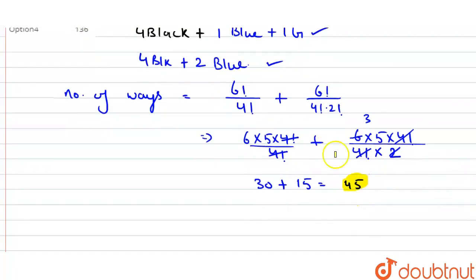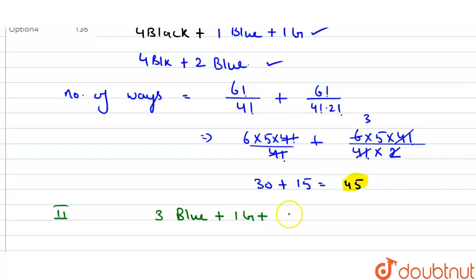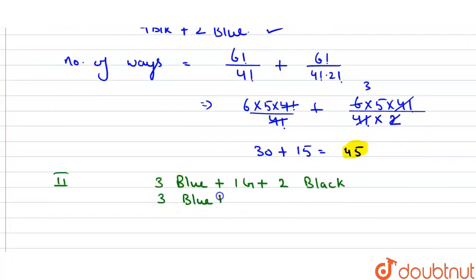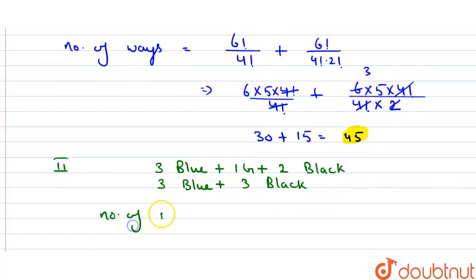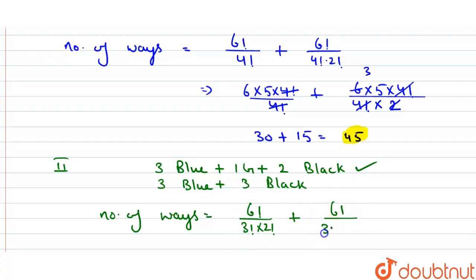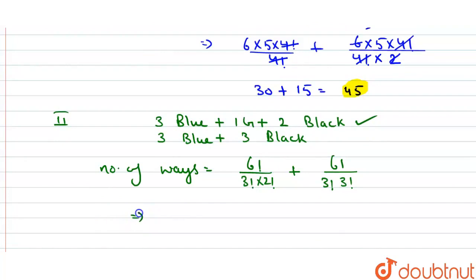Now the second case: if he uses all 3 blue flags. The possibilities are: either use 1 green flag and 2 black flags (totaling 6), or use 3 blue flags with 3 black flags. So the number of ways will be equal to 6 factorial divided by 3 factorial × 2 factorial, plus second case: 6 factorial divided by 3 factorial × 3 factorial. So 6 × 5 × 4 × 3 factorial divided by 3 factorial × 2.